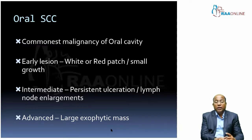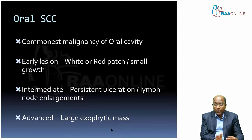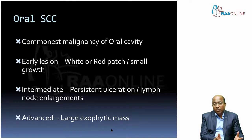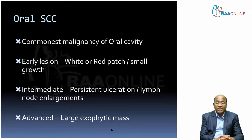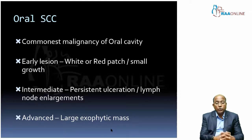The early lesion you might see is a white or red patch or a small growth. You can have an intermediate type where there is persistent ulceration with possible enlarged lymph nodes, or a patient can come with a huge exophytic mass. Unfortunately, even today in our part of the world, we see patients presenting with huge fungating tumors breaking through the skin before they seek help.